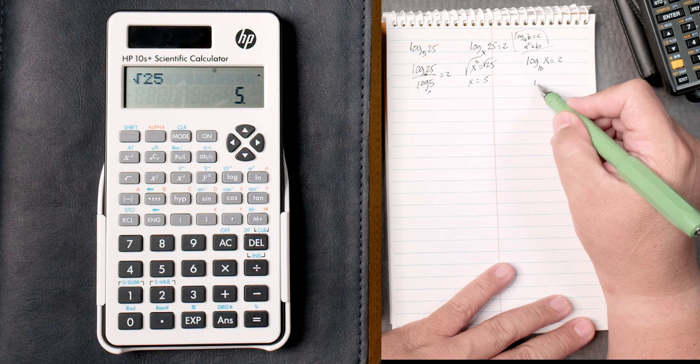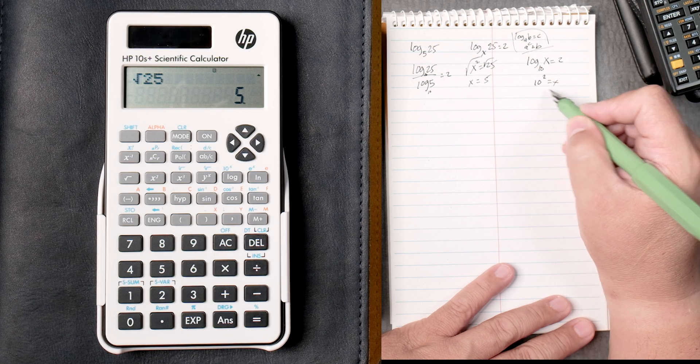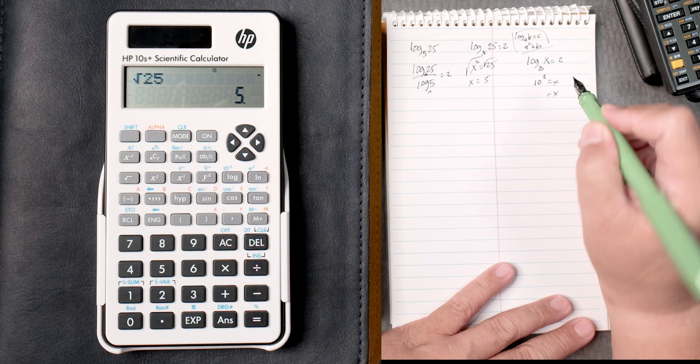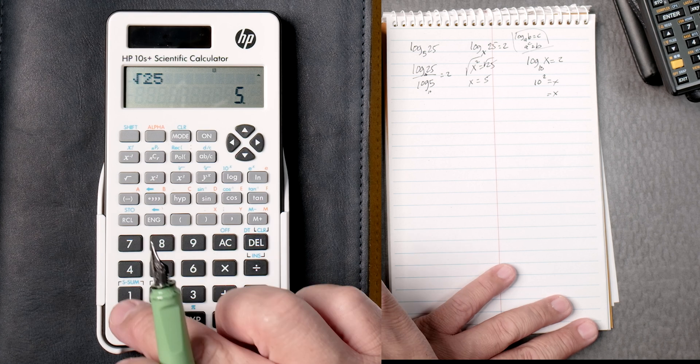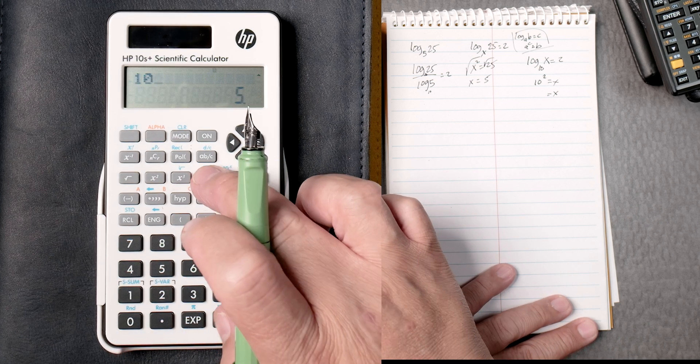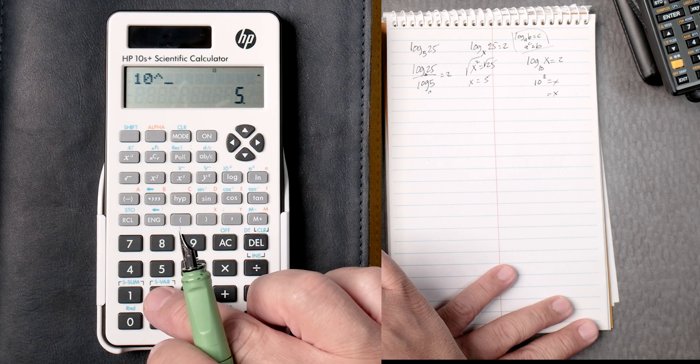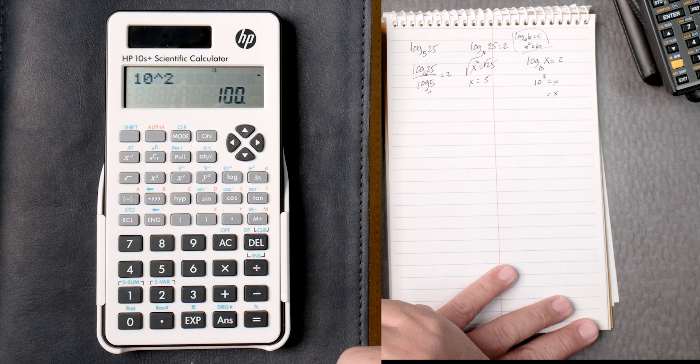So here we're going to rewrite it. 10 squared equals x. x equals 10 squared. Let's see. We can say 10, y to the x, 2 equals 100.